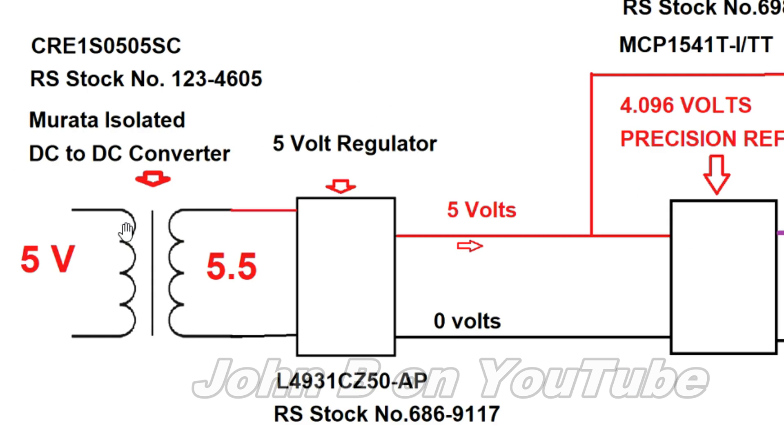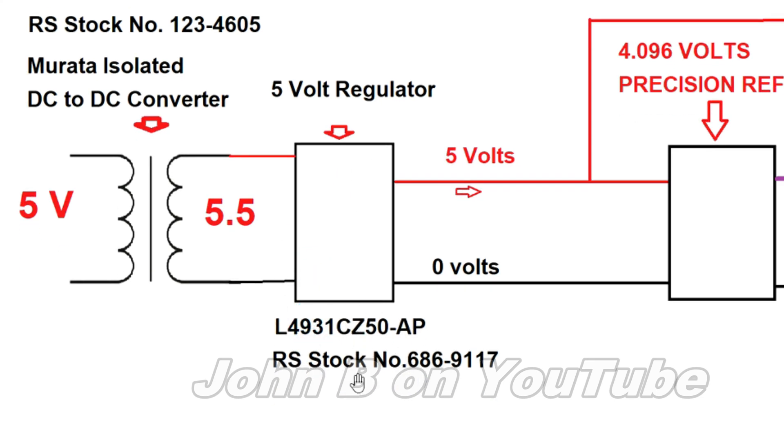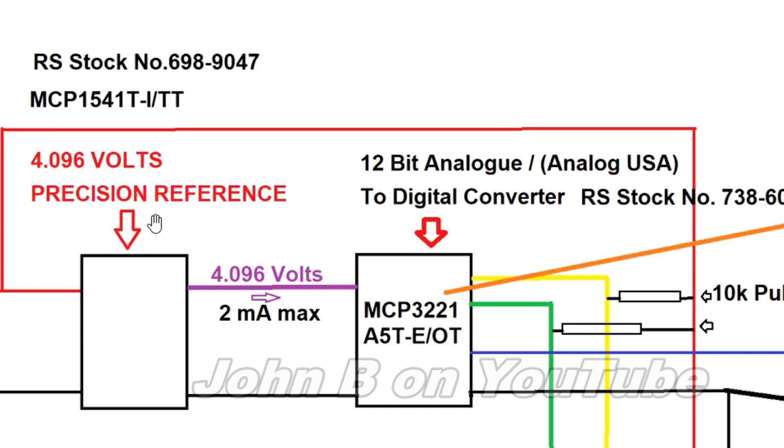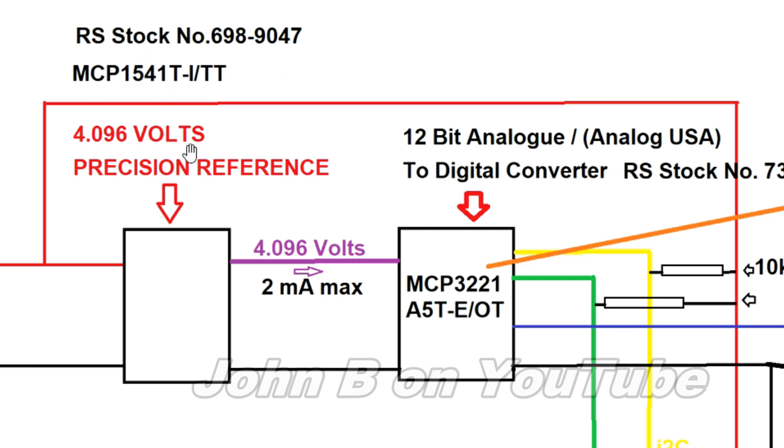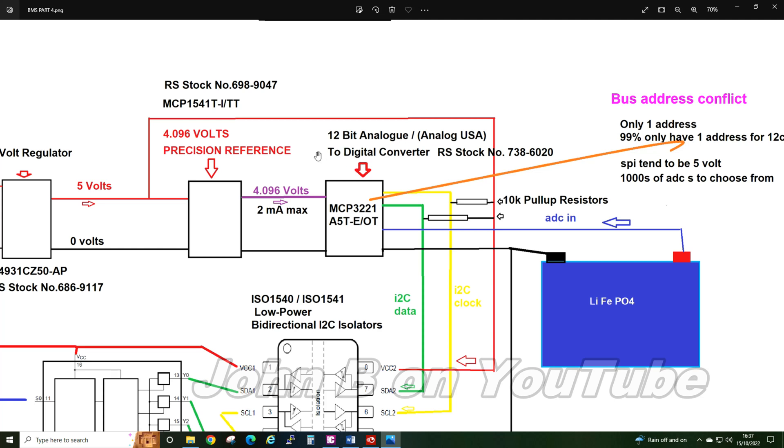Here's my schematic for this current project as it stands now. The Murata isolated DC to DC converter—there's the RS part number, Murata's part number there—that goes into a 5 volt regulator. I've chosen this 5 volt regulator, that's the RS part number. So we get 5 volts out. That goes into the precision reference chip—there's Microchip's part number, RS part number. We get 4.096 volts out plus or minus one percent. There are better ones available.